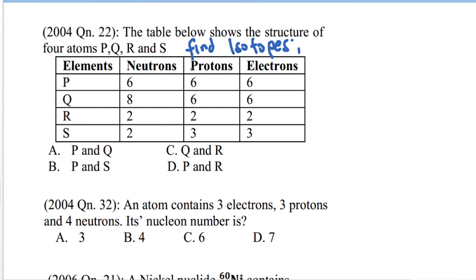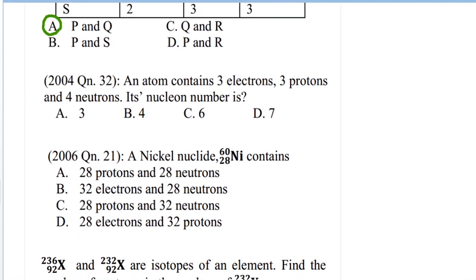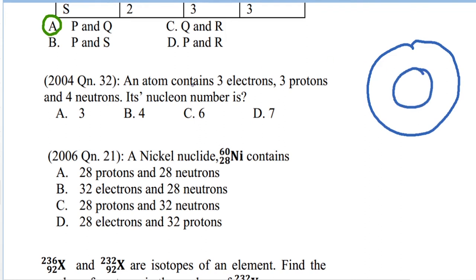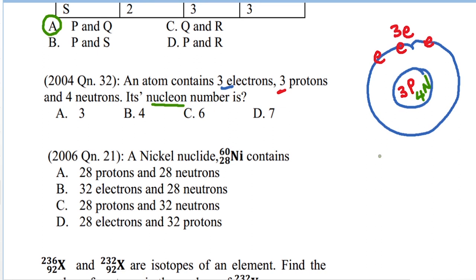To find isotopes: they have the same number of protons but different neutrons, so the answer is P and Q — answer A. Next question: an atom contains three electrons, three protons, and four neutrons. The nucleon number is the same as the mass number — protons plus neutrons in the nucleus. So: 3 + 4 = 7. The answer is D.